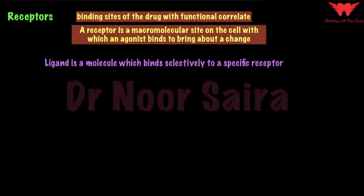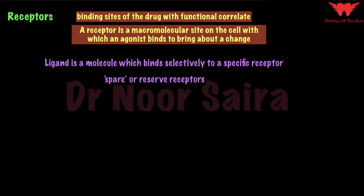You can have different forms of receptors. One is called a spare or reserve receptor. Some experiments showed that high concentrations of agonist can still produce maximum response in the presence of an antagonist, and this is because of some spare or reserve receptors.